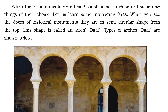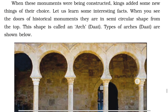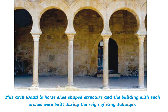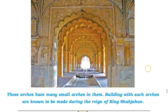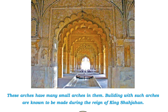When these monuments were being constructed, kings introduced new things of their choice. When you see the doors of historical monuments, they are in a semi-circular shape from the top. This shape is called an arc. Types of arcs are shown. You can see semi-circular arcs. These arcs have many small arcs in them. Buildings with such arcs are known to have been made during the reign of king Shah Jahan.